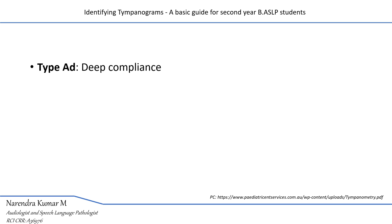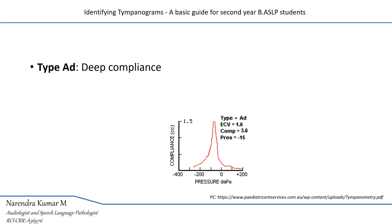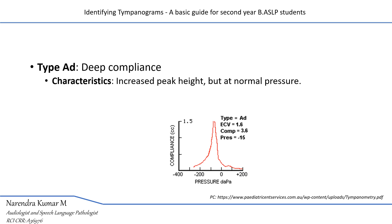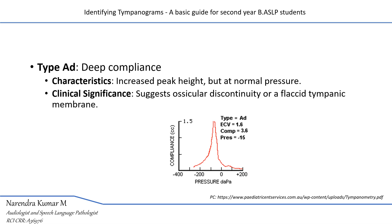Type AD tympanogram indicates that the compliance of the tympanic membrane is higher — the tympanic membrane is hypermobile in nature. It is characterized by an increased peak height, but the middle ear pressure is within normal limits. It indicates ossicular chain discontinuity, a flaccid or thin tympanic membrane, or sometimes a healed perforation of the tympanic membrane.